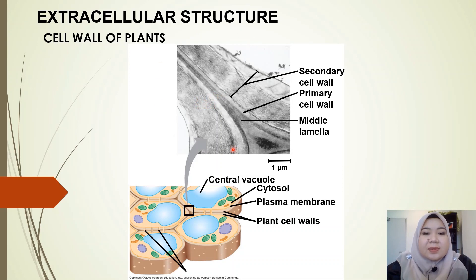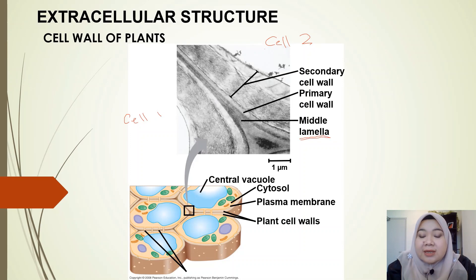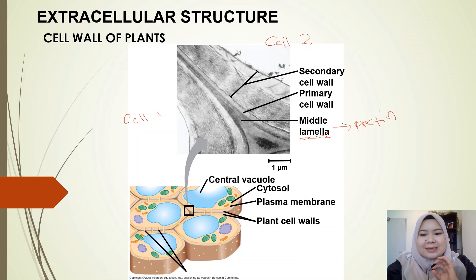Looking at a diagram of two plant cells, we can identify cell one and cell two. The first thing to notice is the thin layer in between the two cells — this is the middle lamella, which is rich in the polysaccharide pectin. Pectin is the sticky substance that glues the cells together. We can also see the two cell walls of each cell.